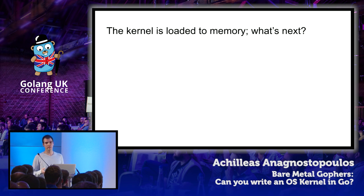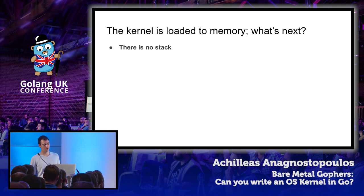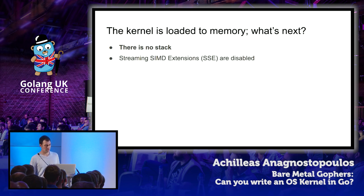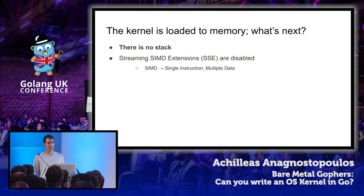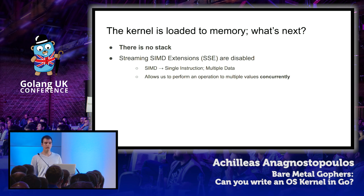The bootloader has loaded the kernel in memory and jumped to our entry point. What happens next? First, we don't have access to a stack, and Go heavily relies on the presence of a stack to operate properly — so we need to provide a working stack. Second, when our system boots, for compatibility reasons, CPU support for Streaming SIMD Extensions (SSE instructions) is currently disabled. SIMD stands for Single Instruction Multiple Data — a special type of instruction that allows the CPU to perform a particular operation on multiple values concurrently.